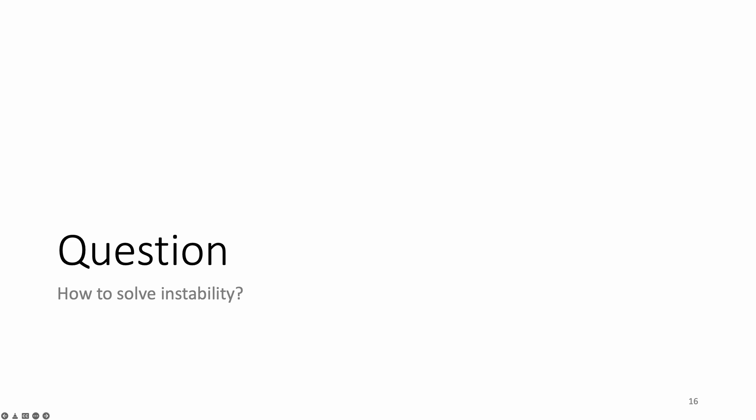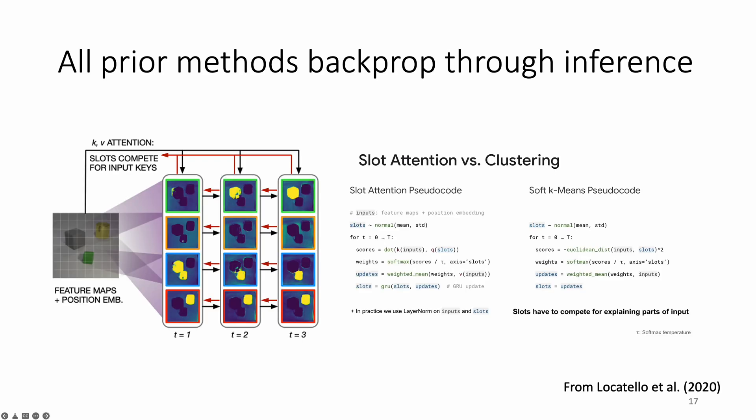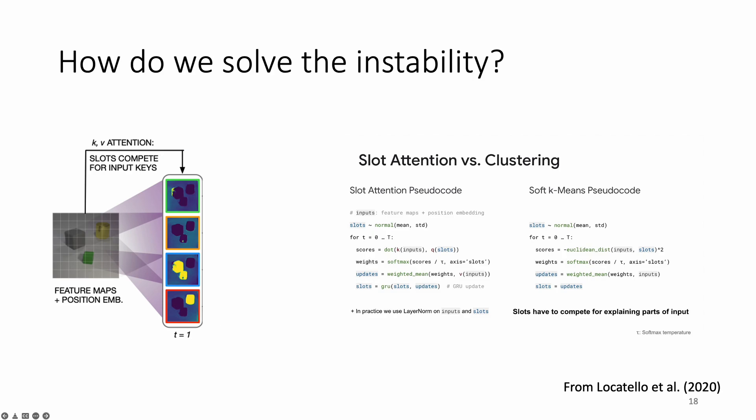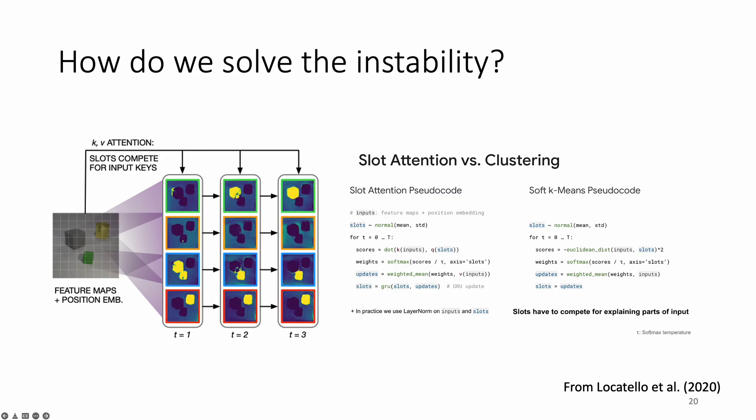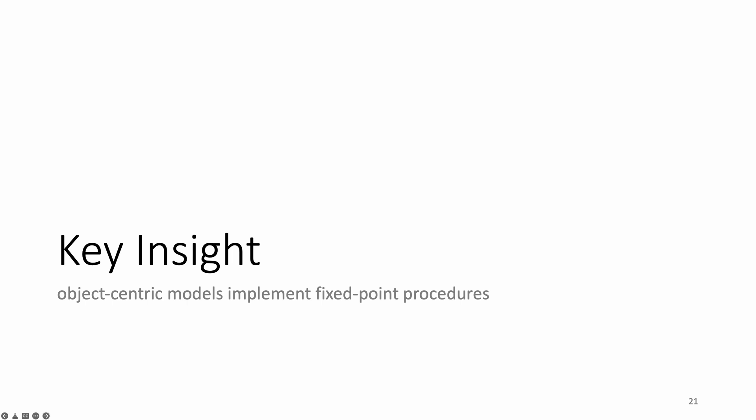So the main question is, how might we solve the problem of training instabilities in these object-centric models? One hypothesis for the reason for these optimization difficulties is that backpropagating through the unrolled optimization, which all prior methods do, creates instabilities as training progresses. So maybe, if we can train these methods without backpropagating through the entire iteration process, we may be able to stabilize training. We observe that these representations generally appear to remain relatively stable as the number of inference iterations increases. So what this suggests is that we can treat object-centric models as learned fixed-point procedures. If we can, we may be able to borrow tools developed for stabilizing the training of other learned fixed-point procedures to solve our problem.